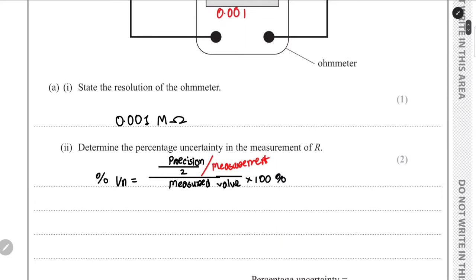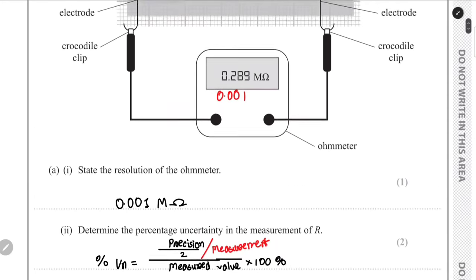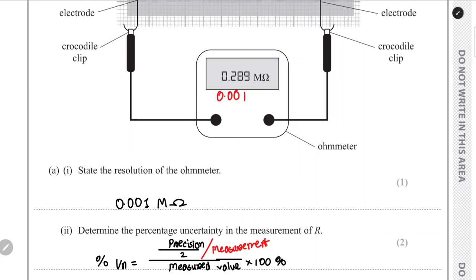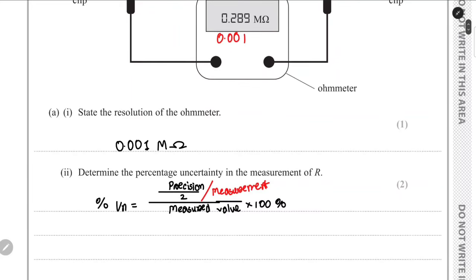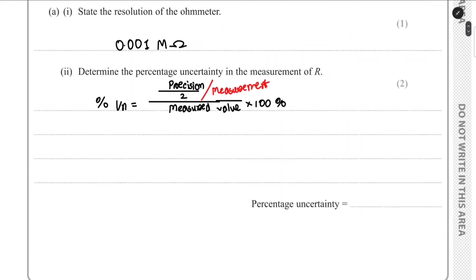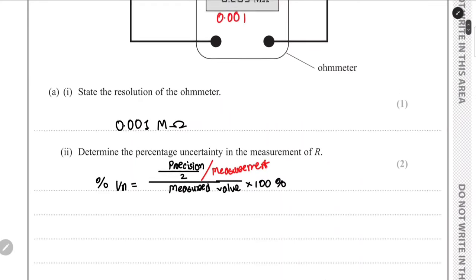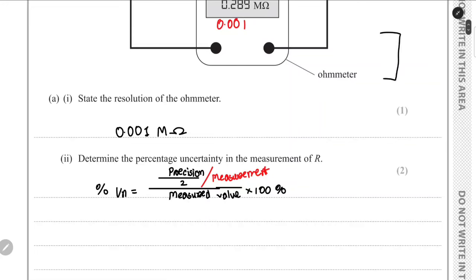That is an important distinction to be made. Single reading instruments are ohmmeters, voltmeters, ammeters, and thermometers when measuring exact temperature. Some double reading instruments are the meter rule and weighing balance.